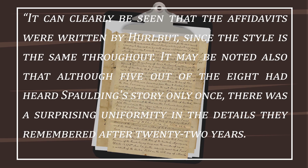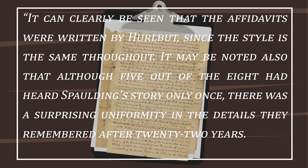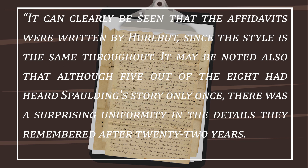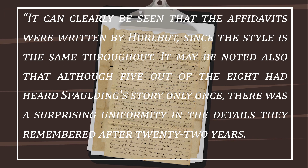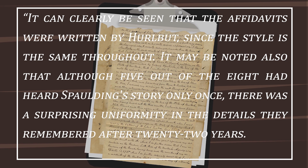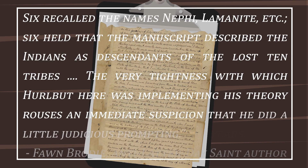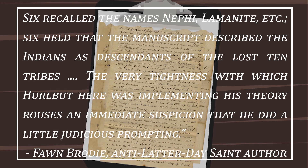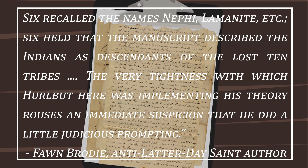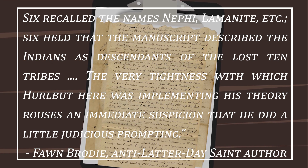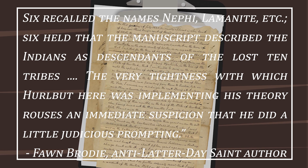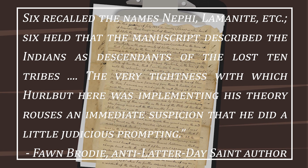It can clearly be seen that the affidavits were written by Hurlbut, since the style is the same throughout. Although five out of the eight had heard Spalding's story only once, there was a surprising uniformity in the details they remembered after 22 years. Six recalled the names Nephi, Lamanite, etc. Six held that the manuscript described the Indians as descendants of the lost ten tribes. The very tightness with which Hurlbut was implementing his theory rouses an immediate suspicion that he did a little judicious prompting.